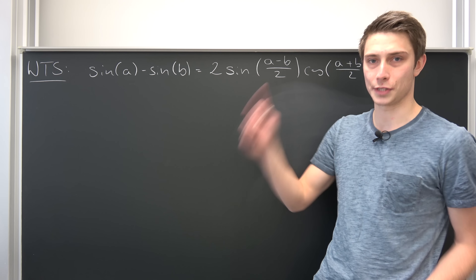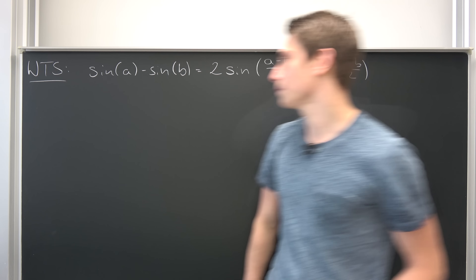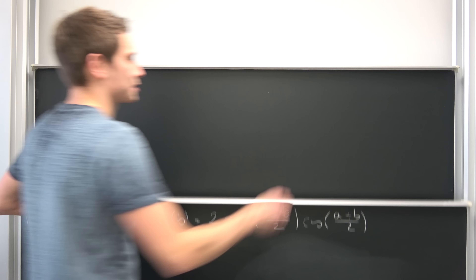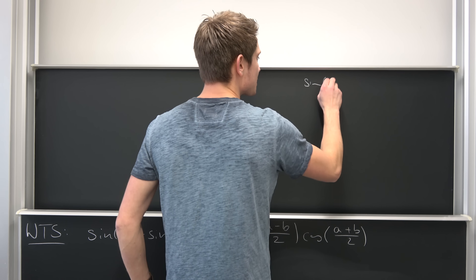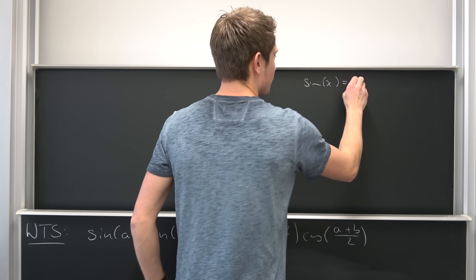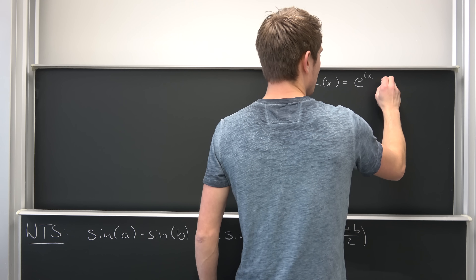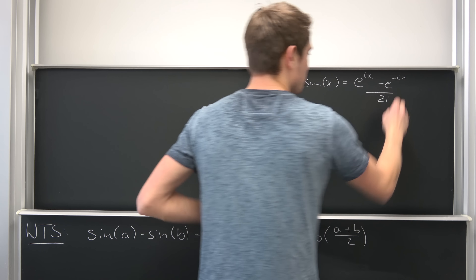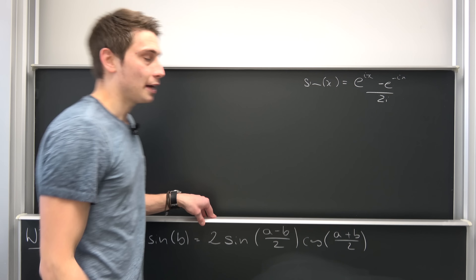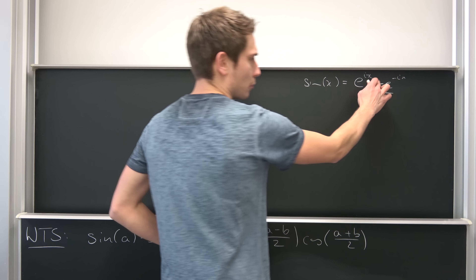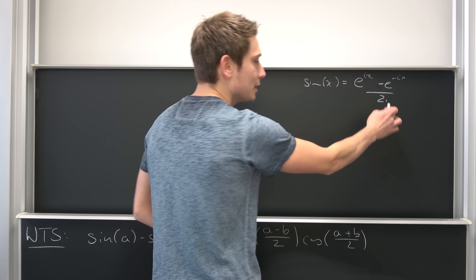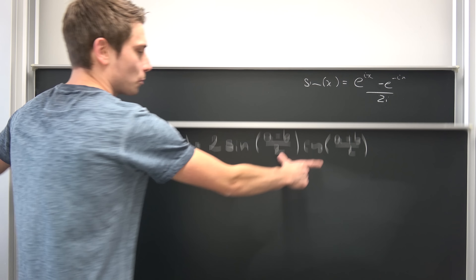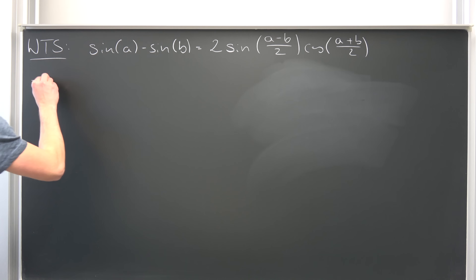I would like to start off with this side right here. I want you to remember that we can express the sine — for example the sine of x — as nothing but e to the i times x minus e to the negative i times x, over 2 times i. And the cosine is nearly the same, just with a plus sign and no i in the denominator. So what exactly is this right-hand side right here?